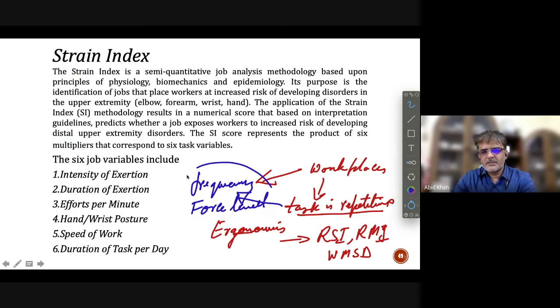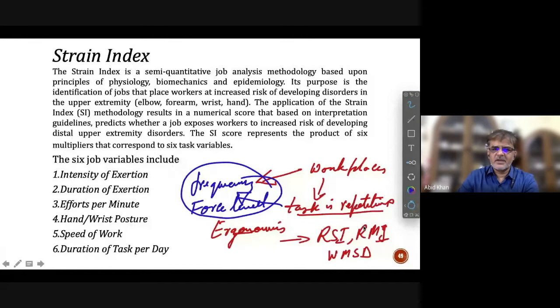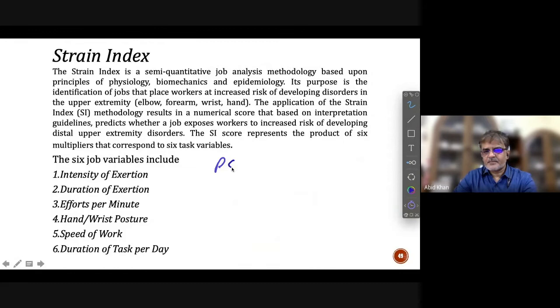These two factors become prominent in those tasks. For example, I have shown you videos of punching, buffing, polishing, or assembling where repetitive work is done having a low force level but a high frequency level. These tasks involve the risk of developing injuries in wrist, forearm, or shoulder, which are repetitive strain injuries, repetitive motion injuries, or work-related musculoskeletal disorders.